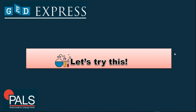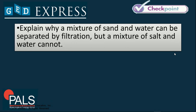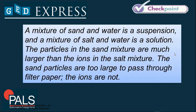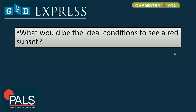Since you already have an understanding of suspension and colloids, let's try this: explain why a mixture of sand and water can be separated by filtration, but a mixture of salt and water cannot. A mixture of sand and water is a suspension, and a mixture of salt and water is a solution. The particles in the sand mixture are much larger than the ions in the salt mixture, and the sand particles are too large to pass through filter paper, while the ions are not.